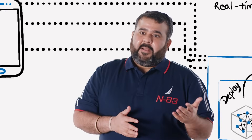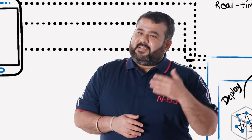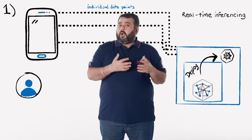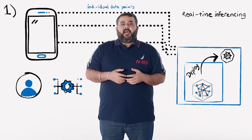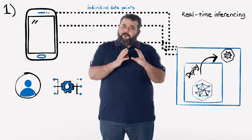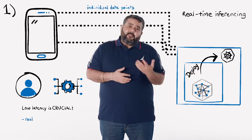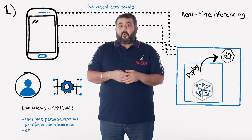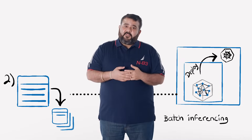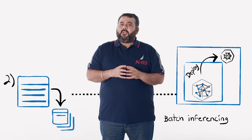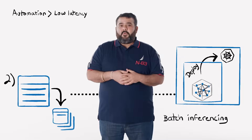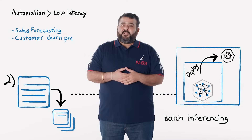The first one, where we send individual tuples as inference requests, is used mostly in scenarios where the model is warranted to respond in real-time. We call it real-time inferencing. The second, where we send a pointer to the location of the batch of data and expect a scored dataset as output once the entire batch is analyzed, is called batch inferencing. Real-time inferencing is used where low latency is crucial — examples include real-time personalization and predictive maintenance. For batch inferencing, latency may not be as important, but it involves heavier preprocessing and more time-consuming model processing. Examples include sales forecasting and customer churn prediction.